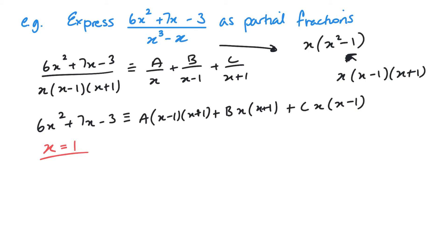Let x equals 1. That would give us 6 lots of 1 squared plus 7 lots of 1 minus 3. When I substitute 1 in, this becomes 0 so this will go, and this will become 0 so this will go. So I'm just left with B times 1 times 2, which makes my life easier. On the left side, I've got 7 plus 6 minus 3, so that's going to give me 10, and 2B on the right, so B is equal to 5.